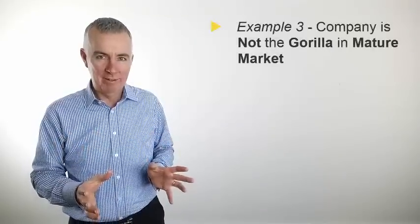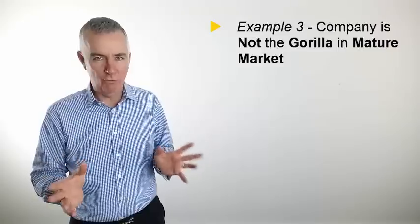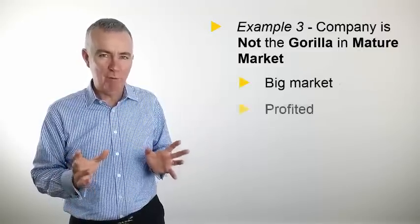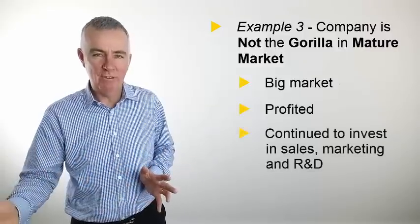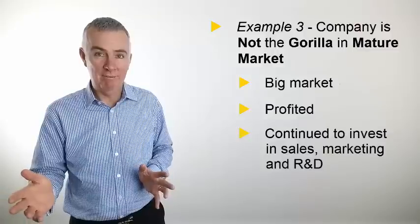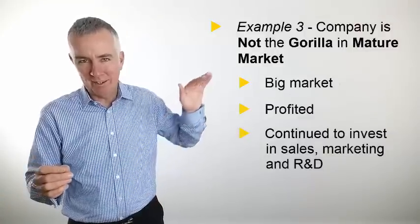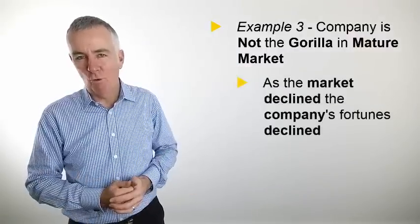For my third go-to-market strategy example, again I'll stick to a mature market, but this time the company's not the gorilla. In fact, they're probably fourth on a good day, maybe less, maybe fifth or sixth in the market. It's a big market and they've done well, they've profited and they've used those profits to continue to invest in sales and marketing as well as R&D.